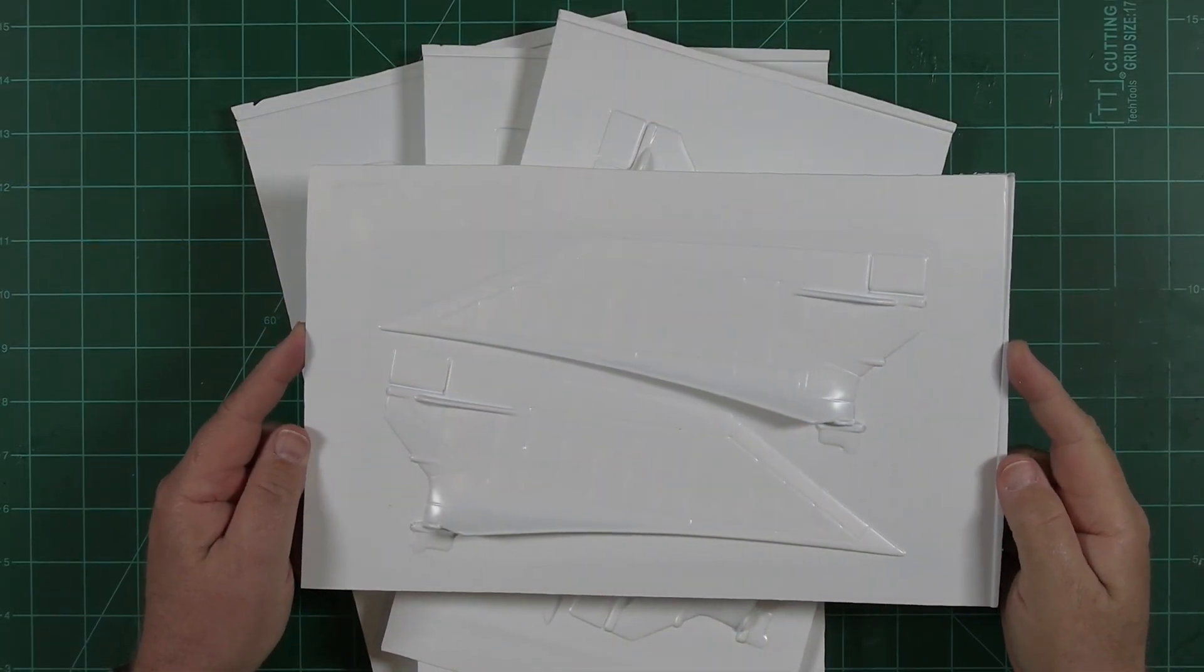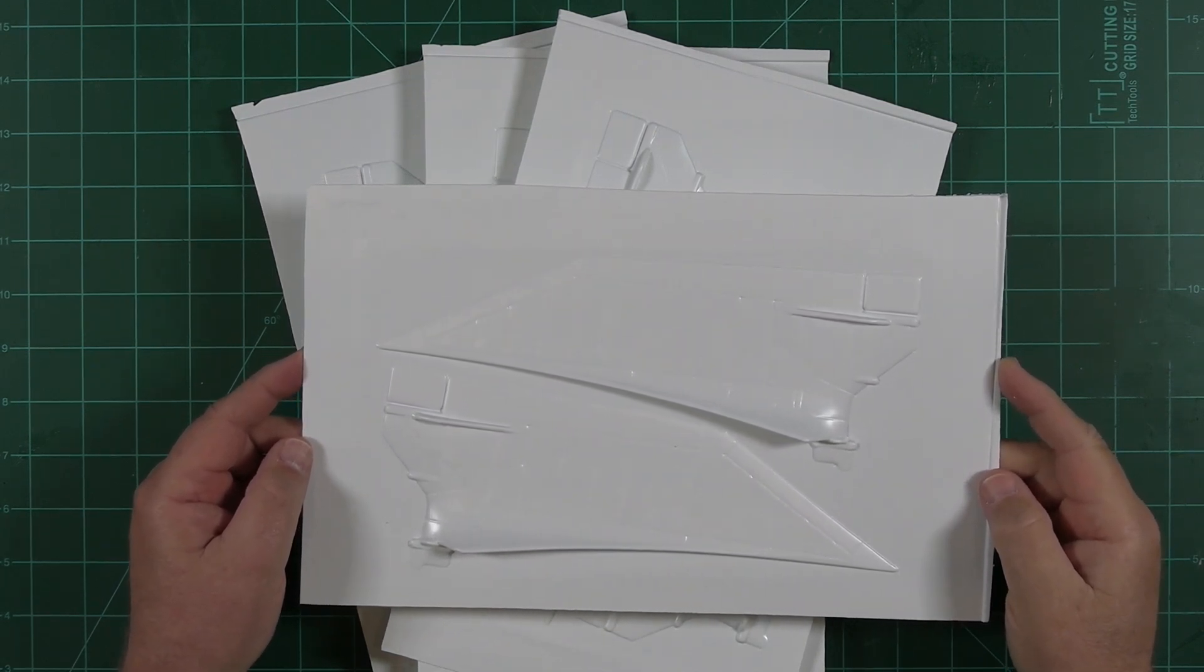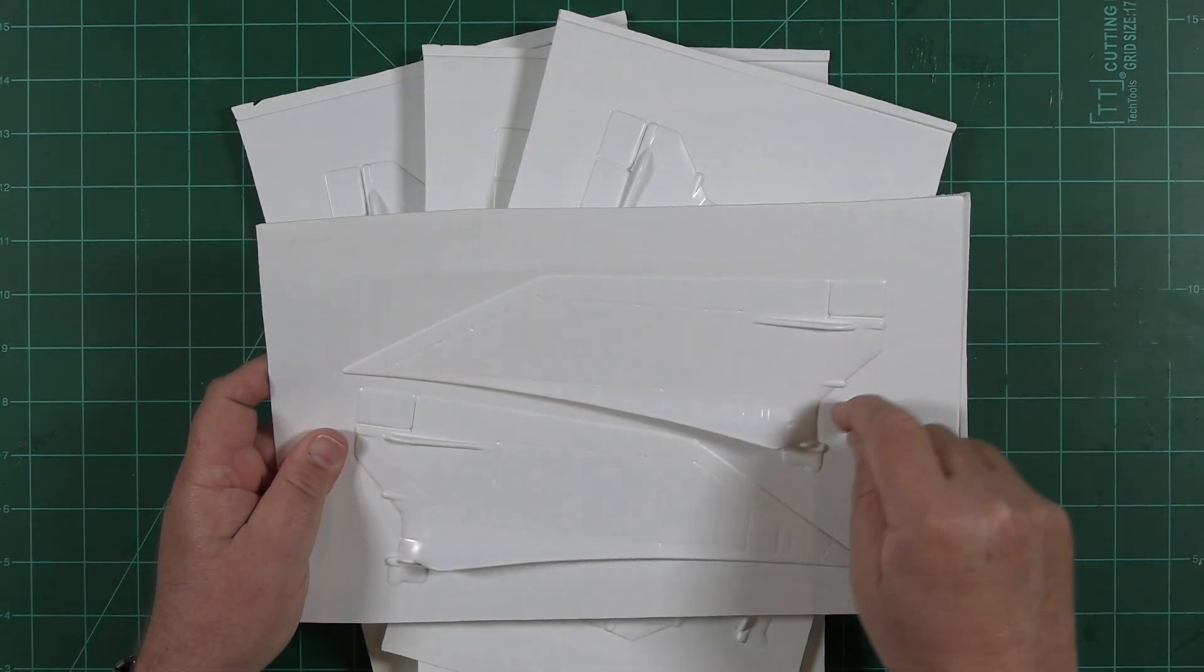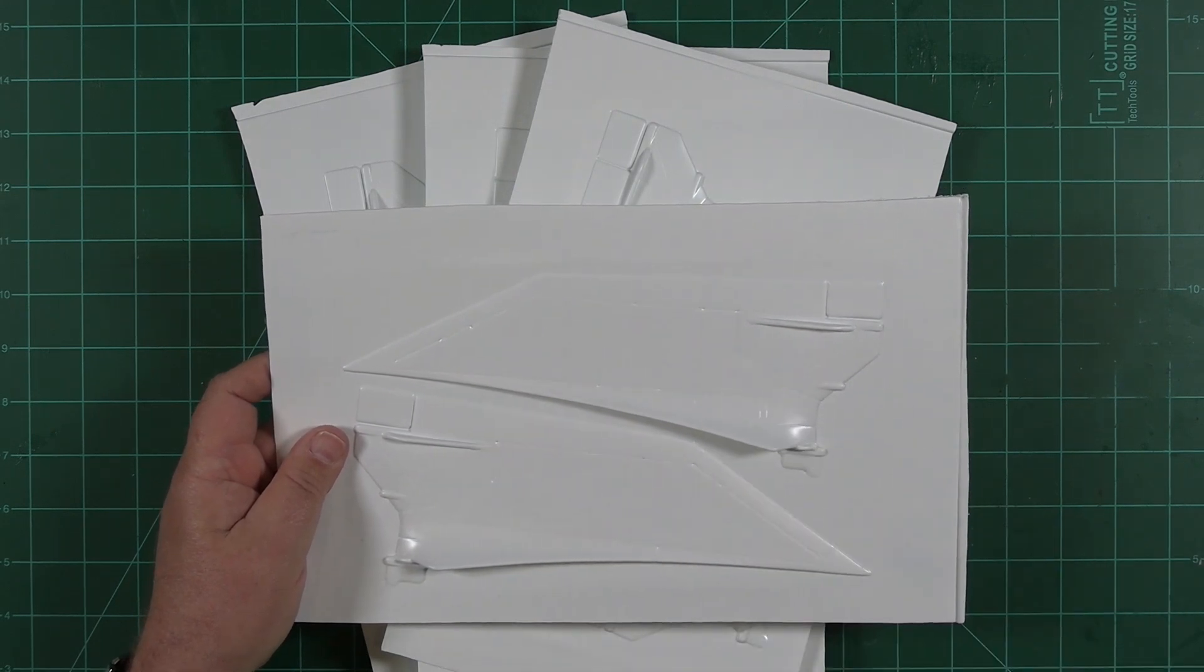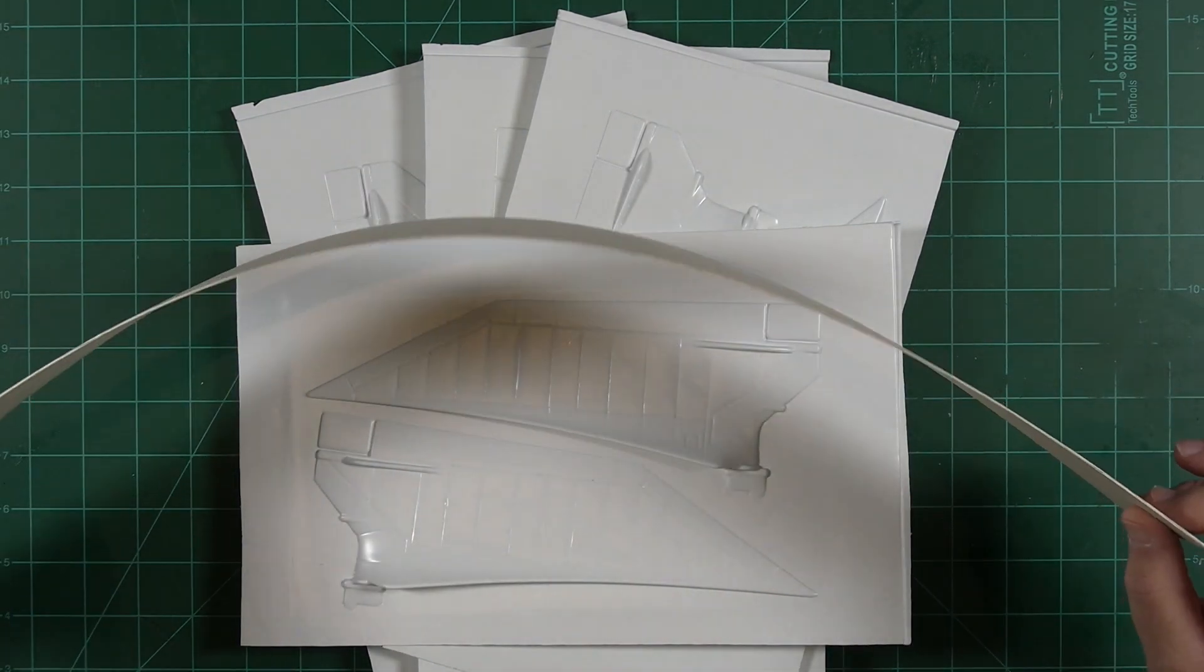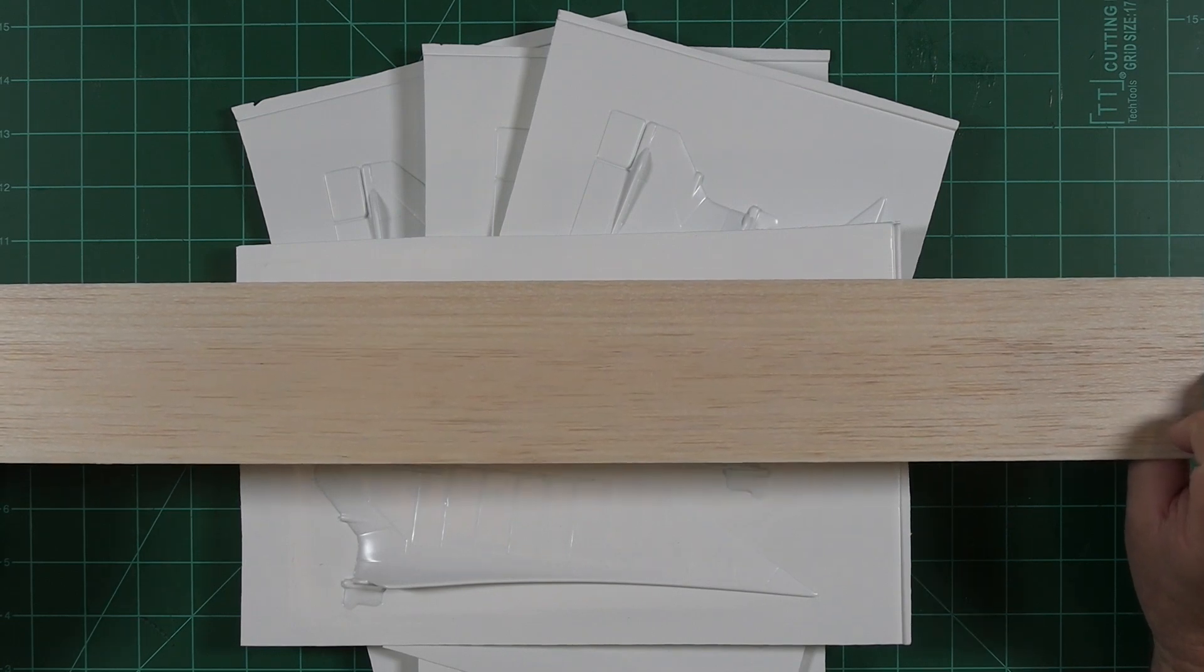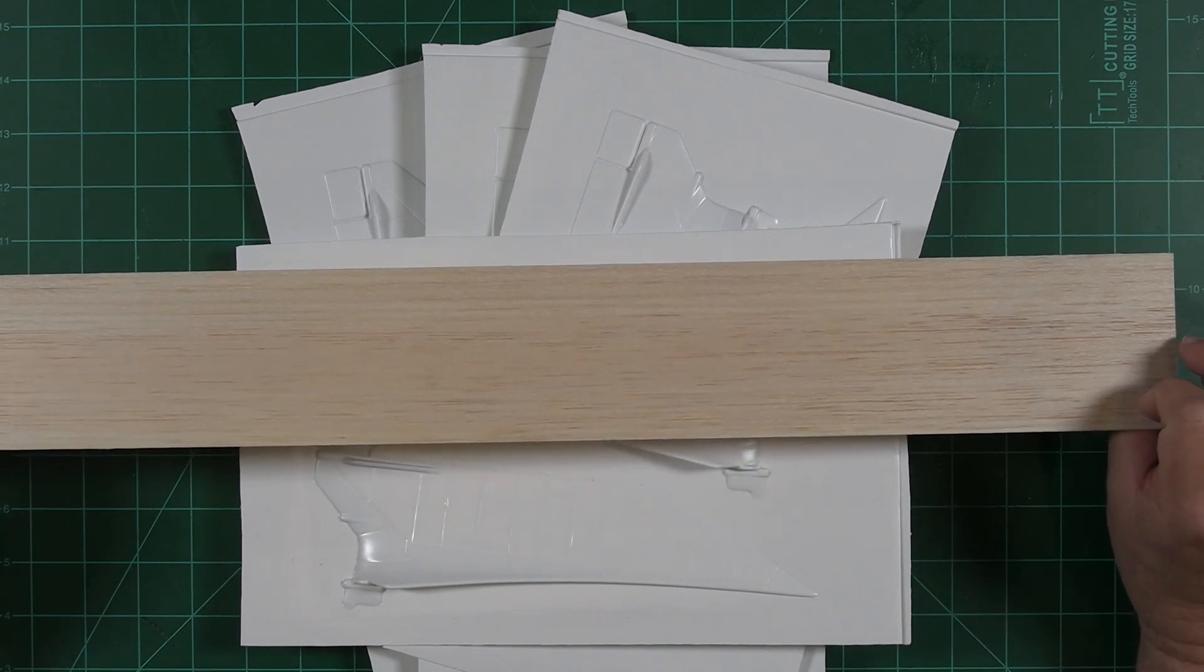Here are the original vacuform fin parts from an Estes Maxi Brute kit. The kit was made starting about 1974 and lasted until about 1980, and then reappeared about 2001. What we're going to do is outline the parts with just a common ballpoint pen, cut them out with a standard X-Acto knife, and then we are going to glue those halves to thin 1/32 inch balsa. That will give us eight individual fin halves with balsa backing. Those balsa backed plastic fin parts can then be glued together very easily to make the finished parts.